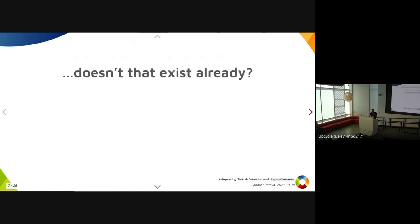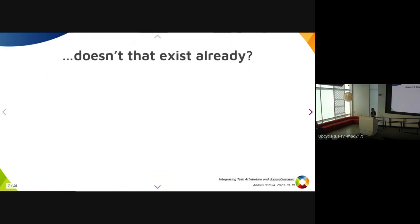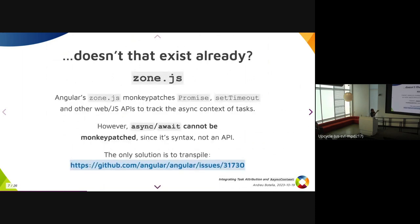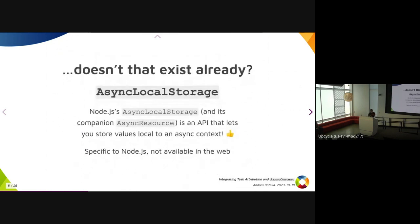All of these cases would be solved by something similar to thread-local variables — like a slot, except for async context and async flow of control. You might think things already do that. zone.js monkey-patches Promise, setTimeout, and other Web and JavaScript APIs to track async context of tasks. But you can't monkey-patch async/await because it's syntax, and even monkey-patching Promise doesn't work because `await 42` uses the built-in Promise, not the global one.